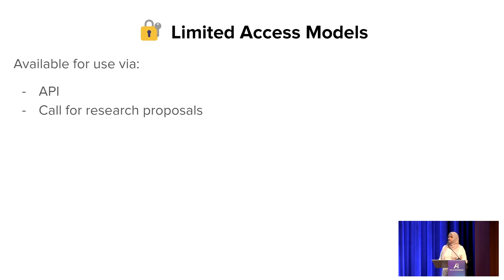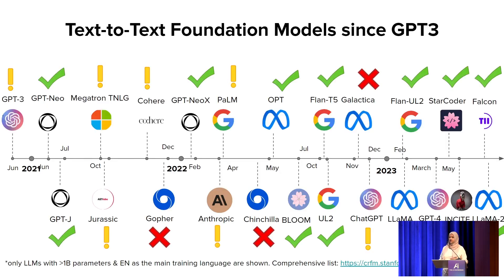Limited access models fall somewhere in the middle, where they are available for use via API or a call for research proposals — people put out a proposal to the model developers, who then choose some proposals and grant access. Given these three different types of model access, going back to this slide, we can see where all these different models fall.